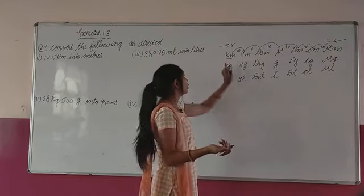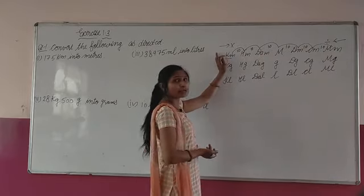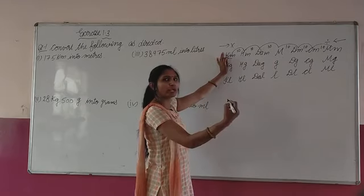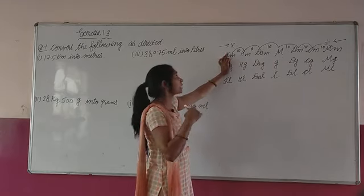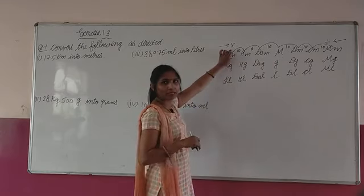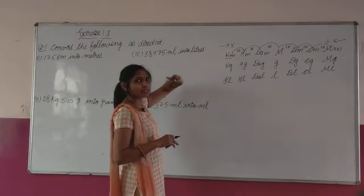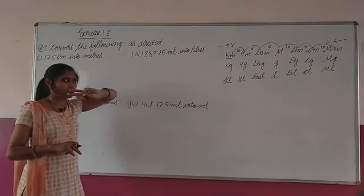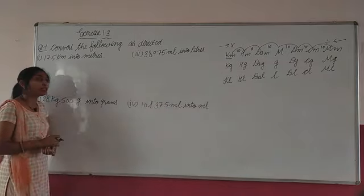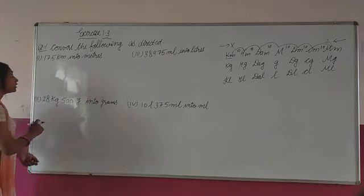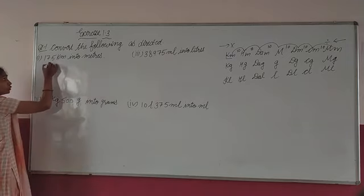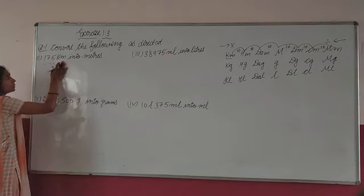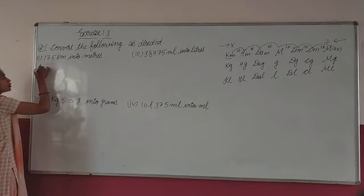Move karna hai, aur kahan karna hai? Right — left to right. Aur jab hum left to right move karte hain, to kya karte hain? Multiply. To humein 3 steps, it means 3 zeros — 10 multiply 10 multiply 10 — kya jayega? 1,000. It means jo 1 km hai, uska solution dekhte hain.